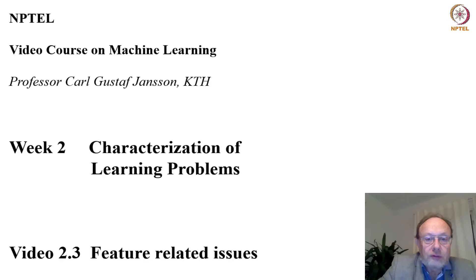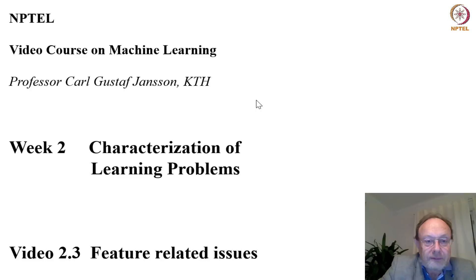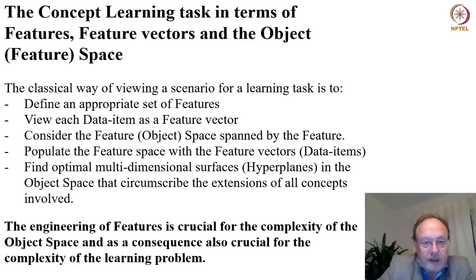Welcome to this third lecture of the second week of this course on machine learning. This lecture will focus on features and related issues. As you may already have understood from the earlier lectures, feature engineering — the way to decide on the appropriate set of features to characterize objects within the dataset — is a crucial issue for machine learning. The idea here is to characterize the concept learning task in terms of the relevant features, feature vectors, and what one can call the object or feature space.